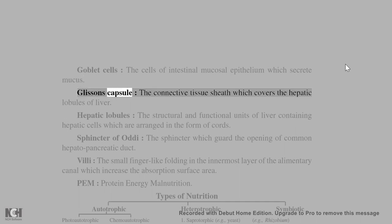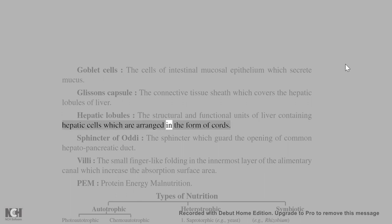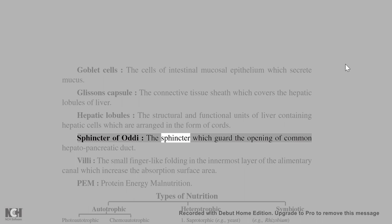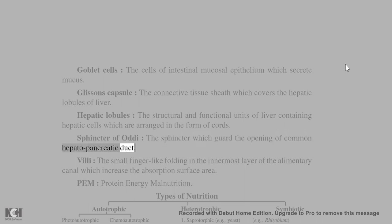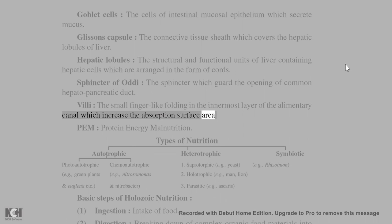Glisson's capsule: the connective tissue sheath which covers the hepatic lobules of the liver. Hepatic lobules: the structural and functional units of liver containing hepatic cells arranged in the form of cords. Sphincter of Oddi: the sphincter which guards the opening of the common hepatopancreatic duct. Villi: small finger-like foldings in the innermost layer of the alimentary canal which increase the absorption surface area.